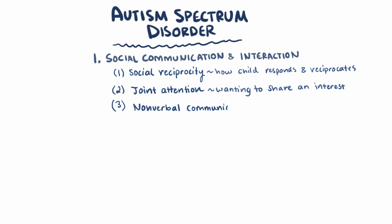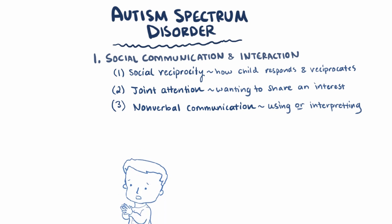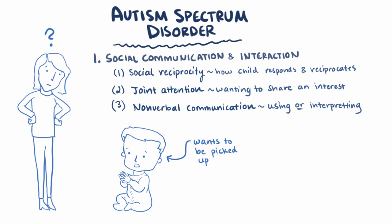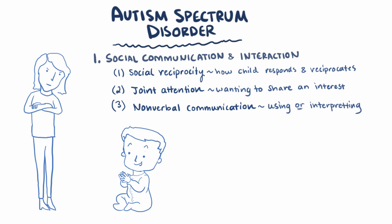Next there's nonverbal communication, which refers to difficulties either using nonverbal communication themselves or interpreting nonverbal cues from someone else. So maybe the child won't put their arms out when they want to be picked up, or maybe they won't be able to tell when a parent's upset, even if the parent's frowning and crossing their arms.